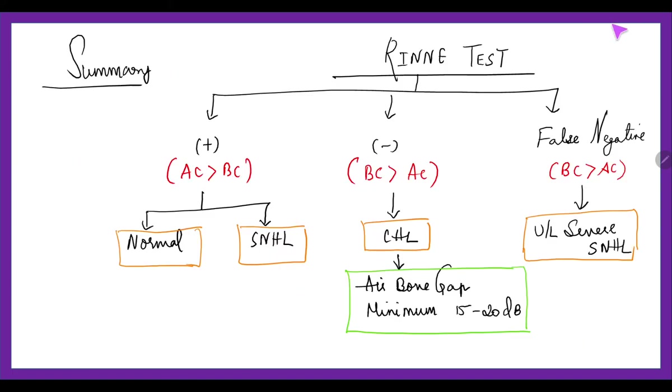To summarize: Rinne test positive means air conduction is better than bone conduction—it could be normal or sensorineural hearing loss. Negative means bone conduction is better than air conduction, that is conductive hearing loss. In any conductive hearing loss, there can be an air-bone gap minimum of 20 decibels.